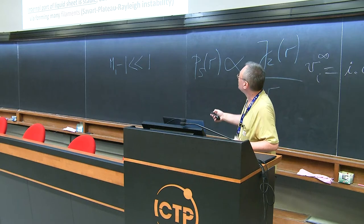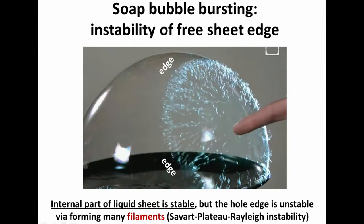Another very nice picture shows the instability of the edge of a soap bubble sheet. The bubble is stable itself for a long time, but once a small hole forms on the sheet, you can see the edge propagating and many filaments forming. These filaments are themselves unstable due to Plateau-Rayleigh instability — cylindrical jet instability — and many droplets are finally formed.